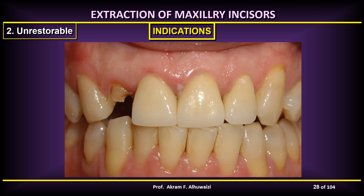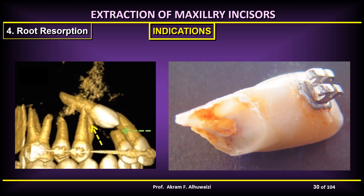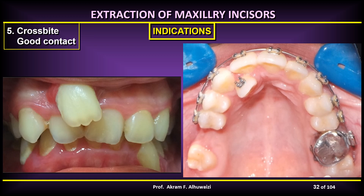A second indication is when you have a grossly carious incisor that cannot be restored. Trauma to the incisors can cause irreparable damage such as fractures, especially when the root is involved. Severe root resorption caused by a maxillary canine erupting and hitting on the lateral or even the central incisors may also indicate their extraction. Buccally or lingually blocked-out lateral incisors with good contact between the central and the canine may also be an indication, although it is not commonly done.